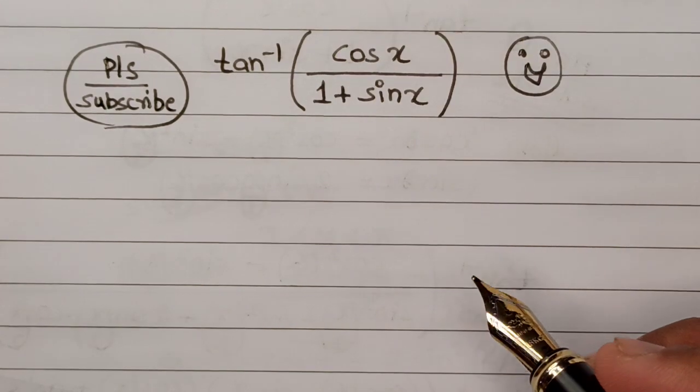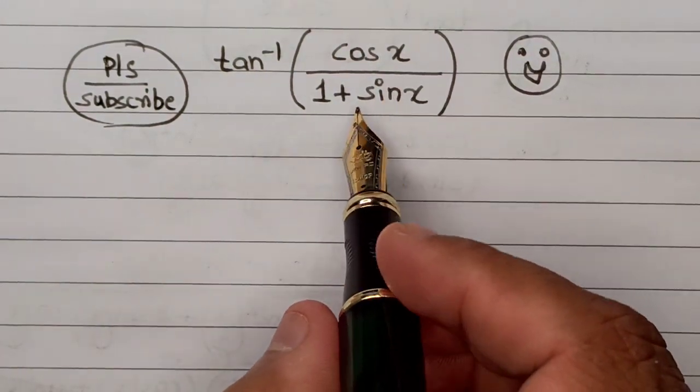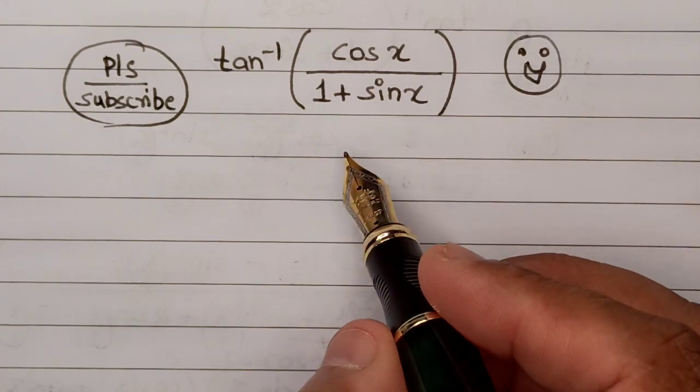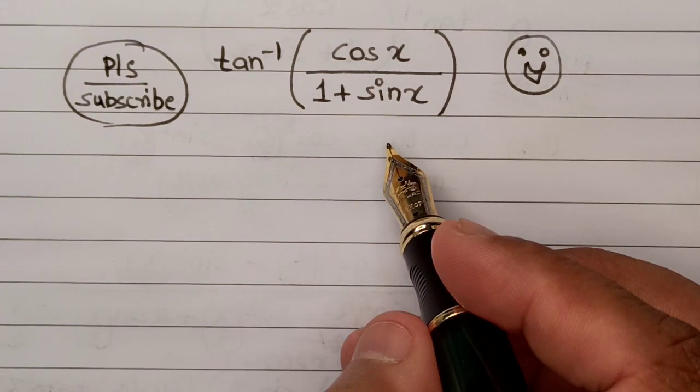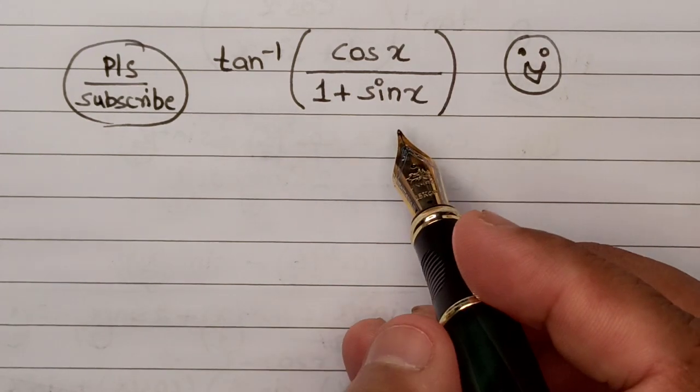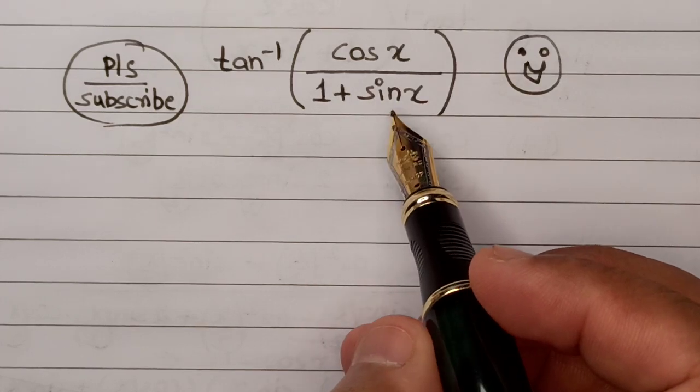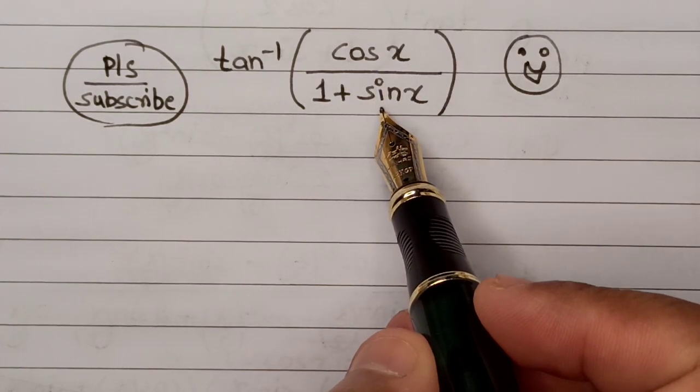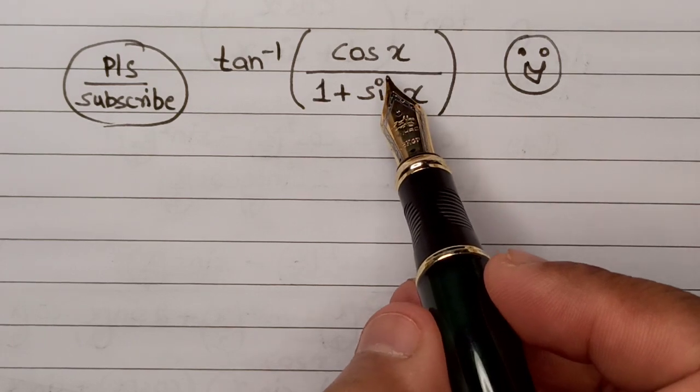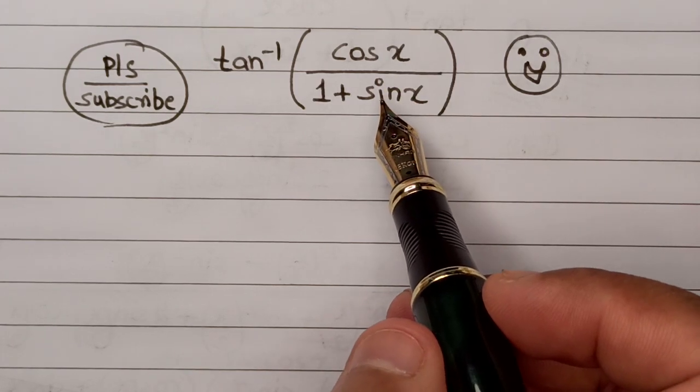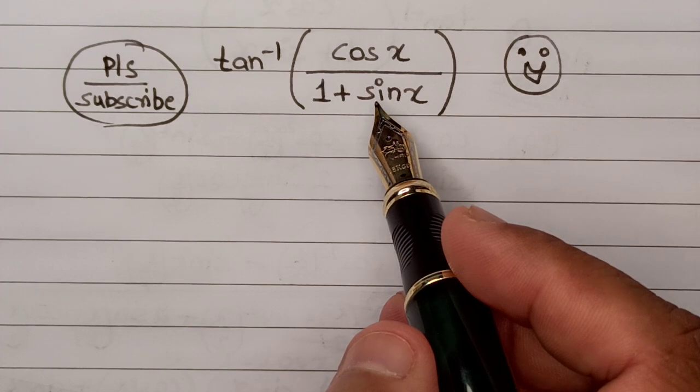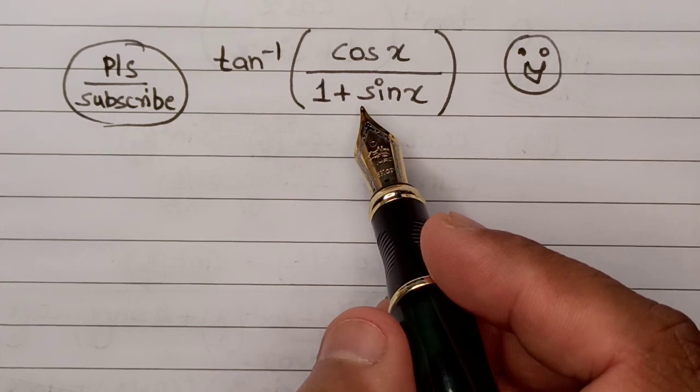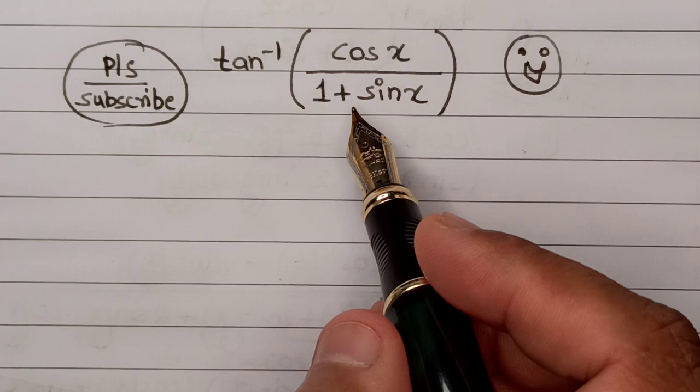Let's start with the solution. Here we have tan inverse of cos x upon 1 plus sine x. The starting thought for this particular problem is that we need to figure out a known formula which can be directly put in the numerator as well as the denominator. Unfortunately, in the given question, none of the formulas can be directly substituted.